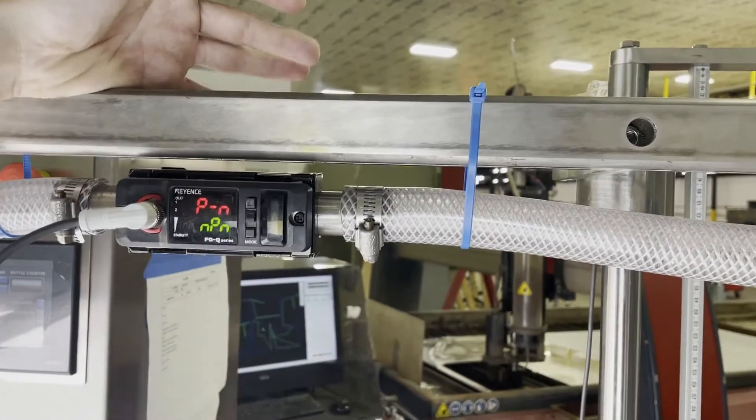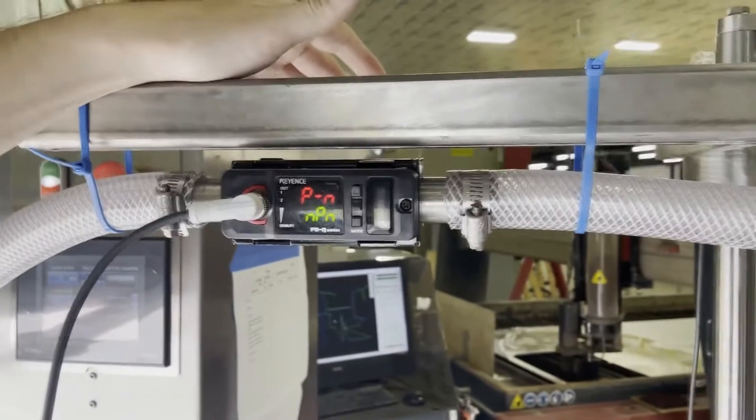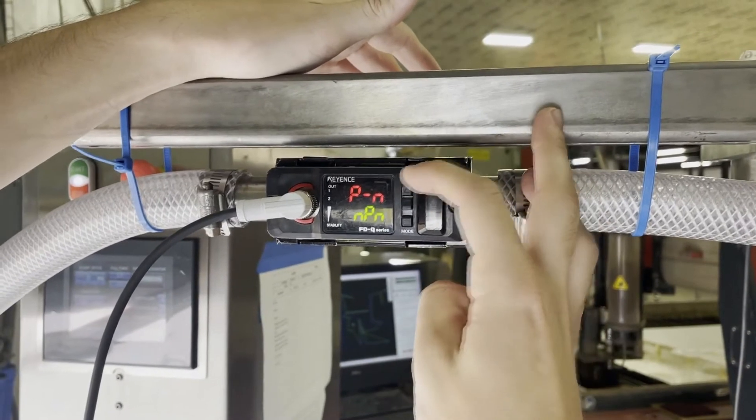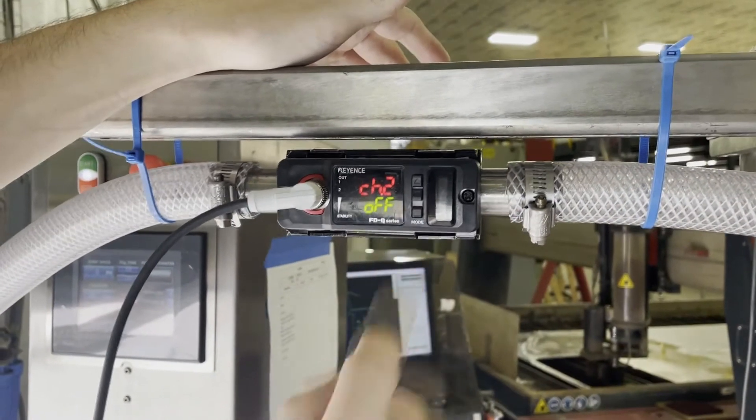I tap the mode button and it allows me to enter through that structure. Now I've got NPN or PNP, I can press up to select those. I'm going to choose PNP, tap the mode button.